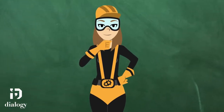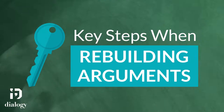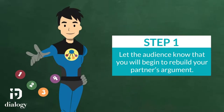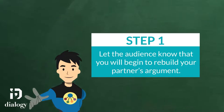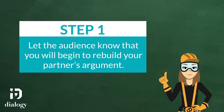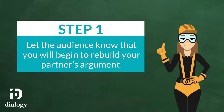There are a few things to keep in mind when rebuilding our arguments. Let's look at the key steps we need to take. Step 1: let the audience know that you will begin to rebuild your partner's argument. As always, Structure Sam reminds us to clearly signpost the part of our speech when we rebuild arguments. We should make it clear in our introduction that we will rebuild our partner's argument later in the speech, and when we get to that part, we should clearly let the audience know that we will rebuild.